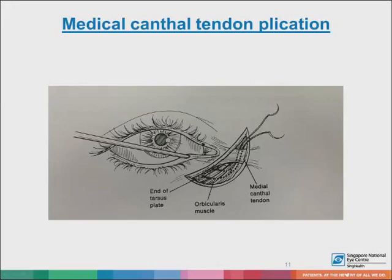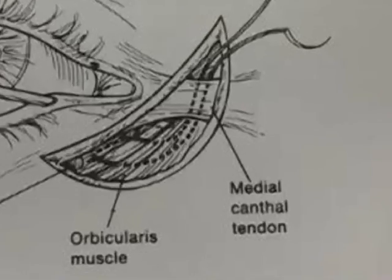For medial canthal tendon plication, we insert a Bowman probe to protect the canalicular system, and pull the medial end of the tarsal plate with a double-arm suture — a 6-0 Vicryl would be appropriate — going through the orbicularis muscle and hitching it onto the medial canthal tendon, which needs to be isolated. This can be performed through a tear trough incision.